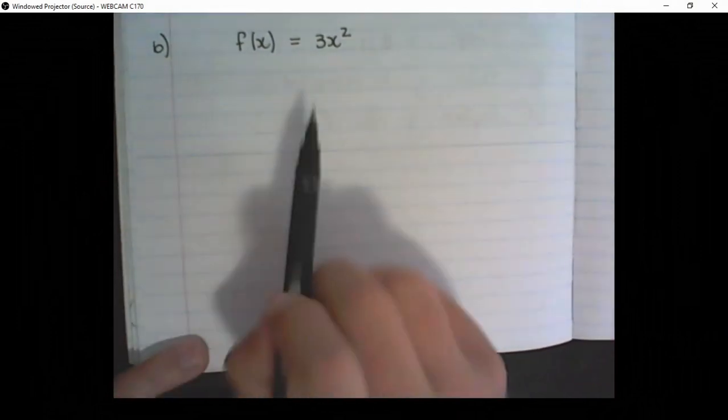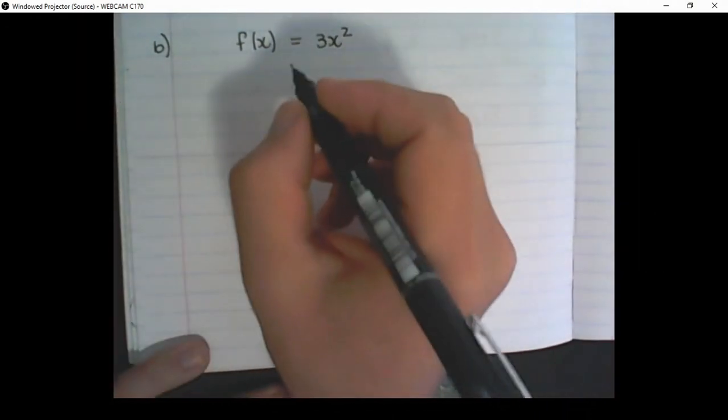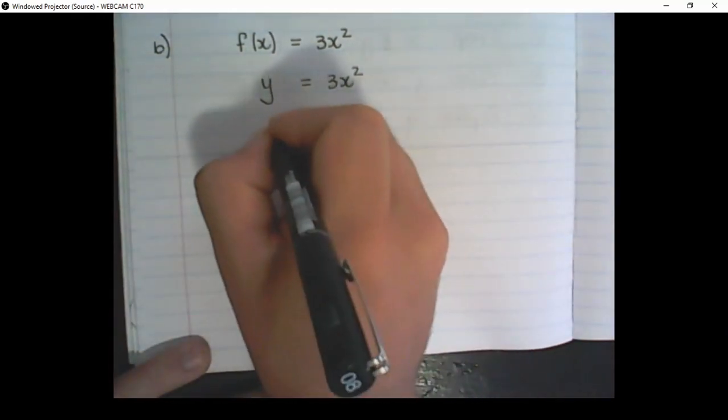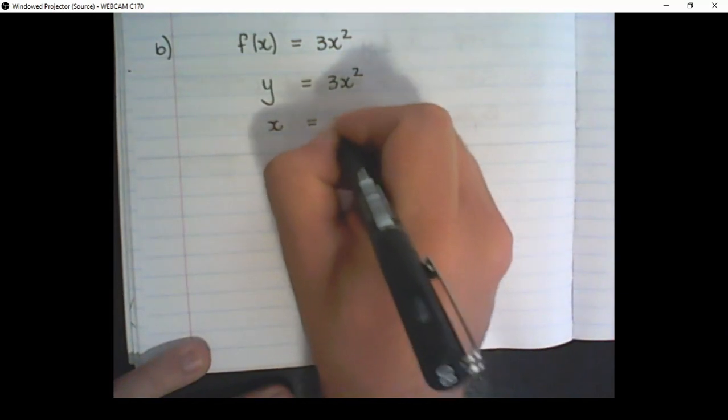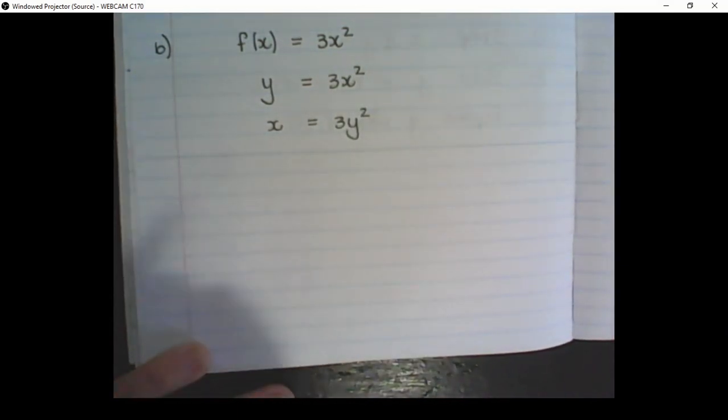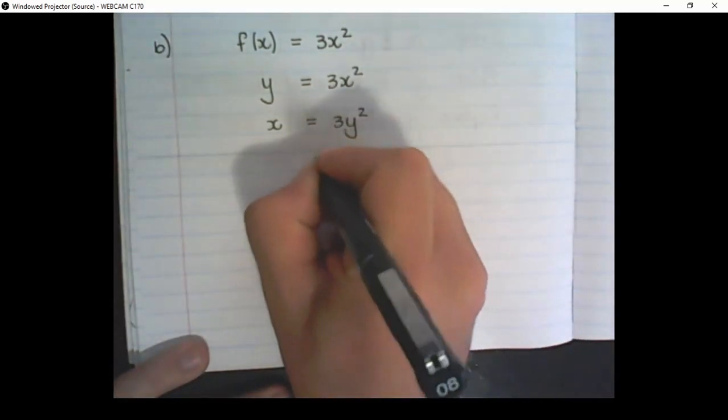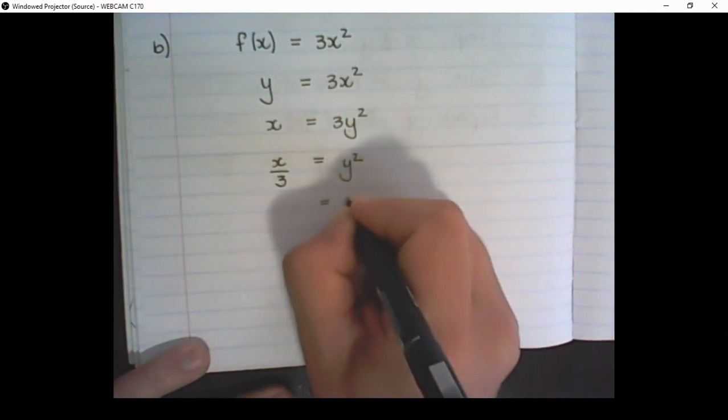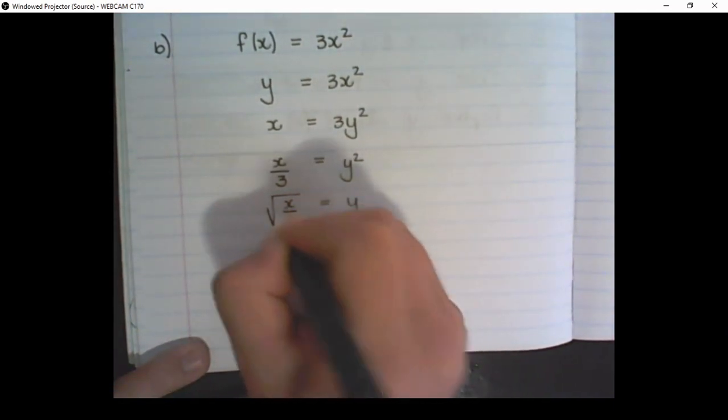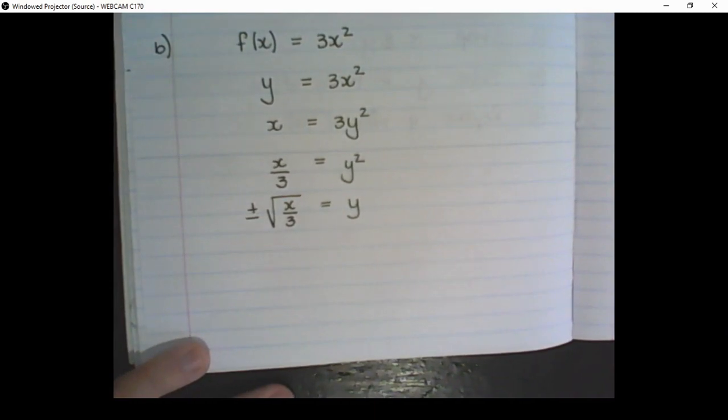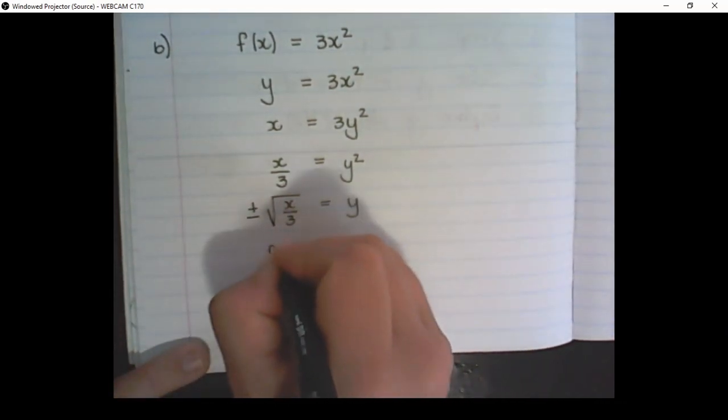In our second example, we have f(x) is equals to 3x squared. So the first step is replace f(x) with y. Second step is swap x and y. So I write x in the place of y and y in the place of x. Then solve y in terms of x. So I divide by 3. And then I take the square root on both sides. But remember, a square root can yield the same answer using positive and negative values.